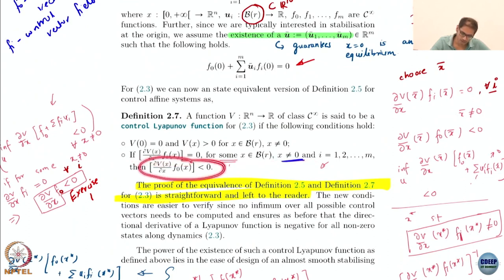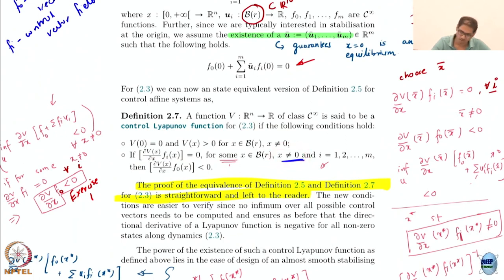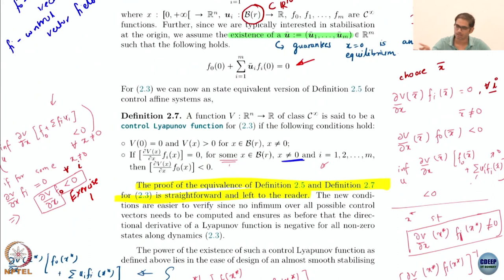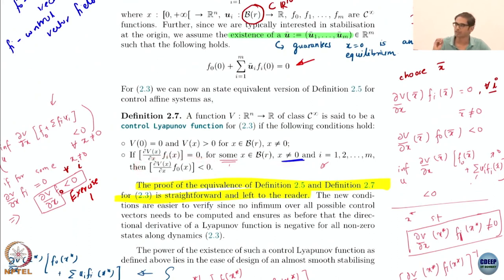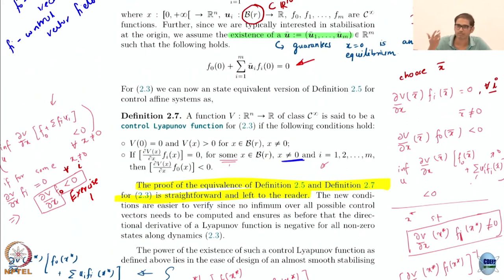That is too easy — most functions we choose are CLFs. The next condition is: if the contribution of the control terms is 0, then we want the drift vector term to be strictly negative for all non-zero states. At the zero state this can be 0, no problem, since you are already at the equilibrium. When the state is non-zero, this has to give a negative contribution. This is the requirement for a CLF.